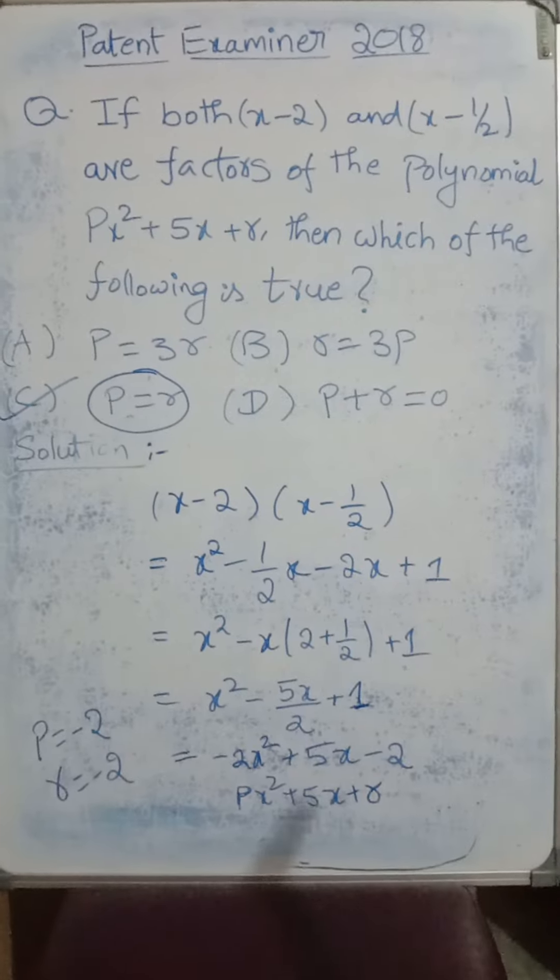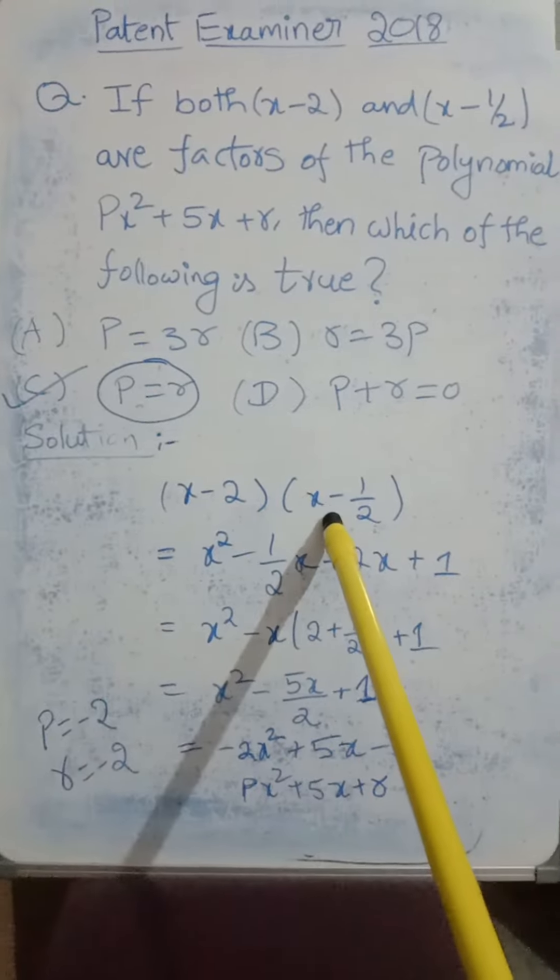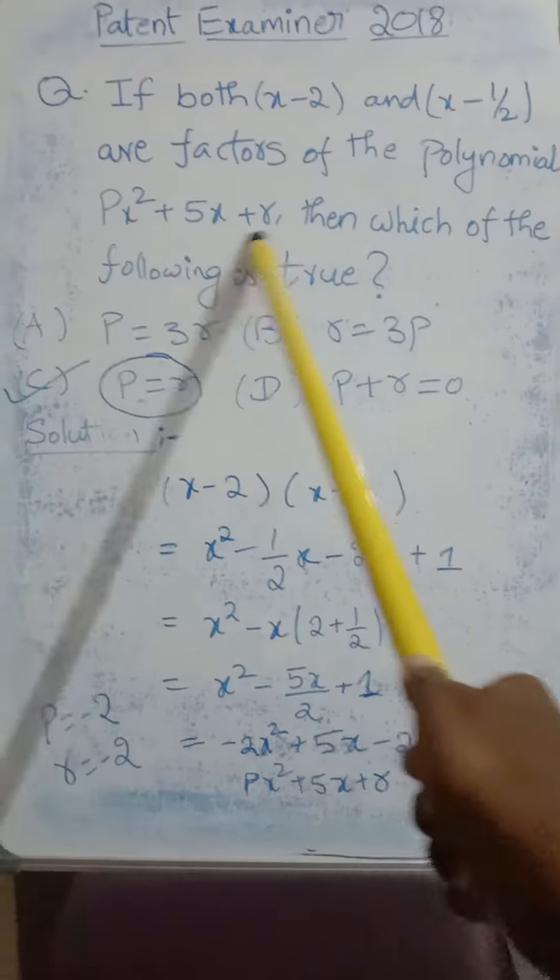Since x minus 2 and x minus 1 by 2 are factors, if I multiply these two I should get this quadratic equation.